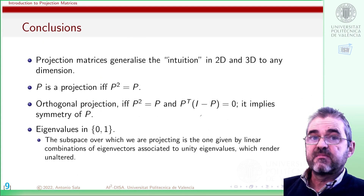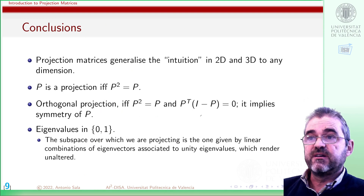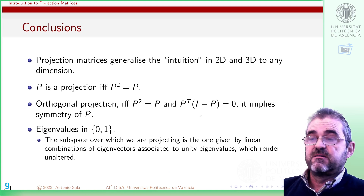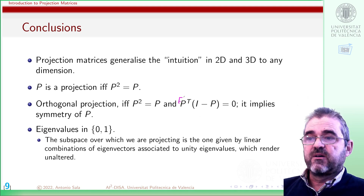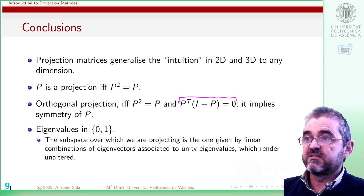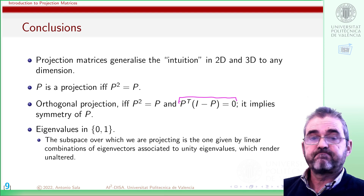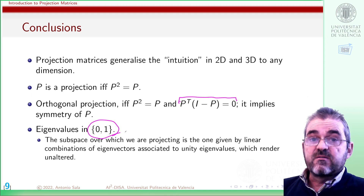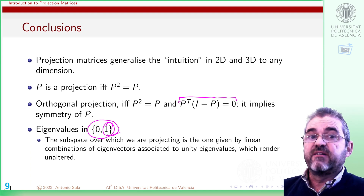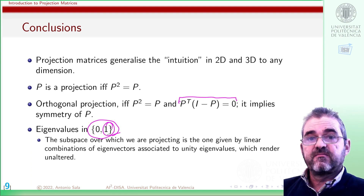In conclusion, in this video we have generalized the intuition from two and three dimensions to any dimension, defining that a linear transformation is a projection if and only if P squared equals P. Orthogonal projection requires the additional condition that P is symmetric. We have proven that eigenvalues must be only 0 or 1, and the subspace being projected onto is spanned by the eigenvectors associated with eigenvalue 1 — the directions that remain unaltered. Thanks for watching.